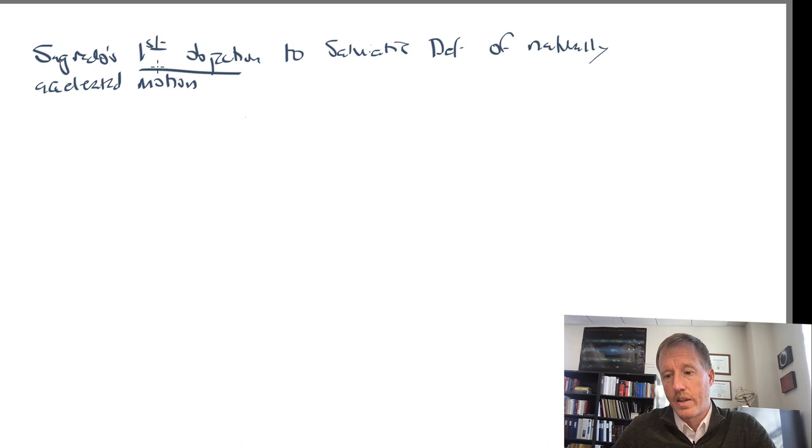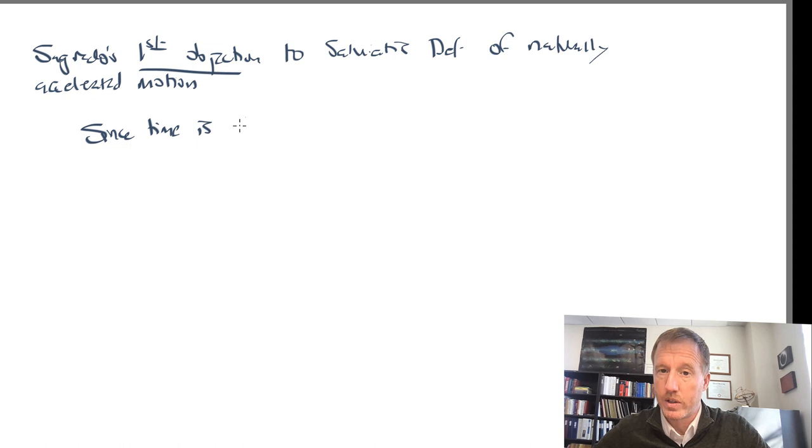He says, what he's saying is that if we take you seriously, then if you look at smaller and smaller and smaller increments of time, the object will be going slower and slower and slower. So if you approach kind of the moment that you drop the object, as you get closer and closer to the moment of dropping, that object must be going slower and slower and slower.